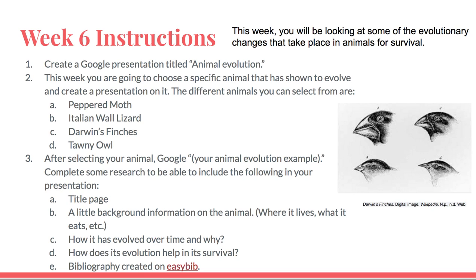Welcome back to our last week of Structure, Function, and Information Processing, which is Unit 3 for Grade 4. Throughout this unit, you've looked at many different concepts that associate with how animals and plants work and how they survive. Last week we began to talk a little bit about evolution, and this week we're going to go a little bit more into the specific concept of evolution in regards to Darwin.